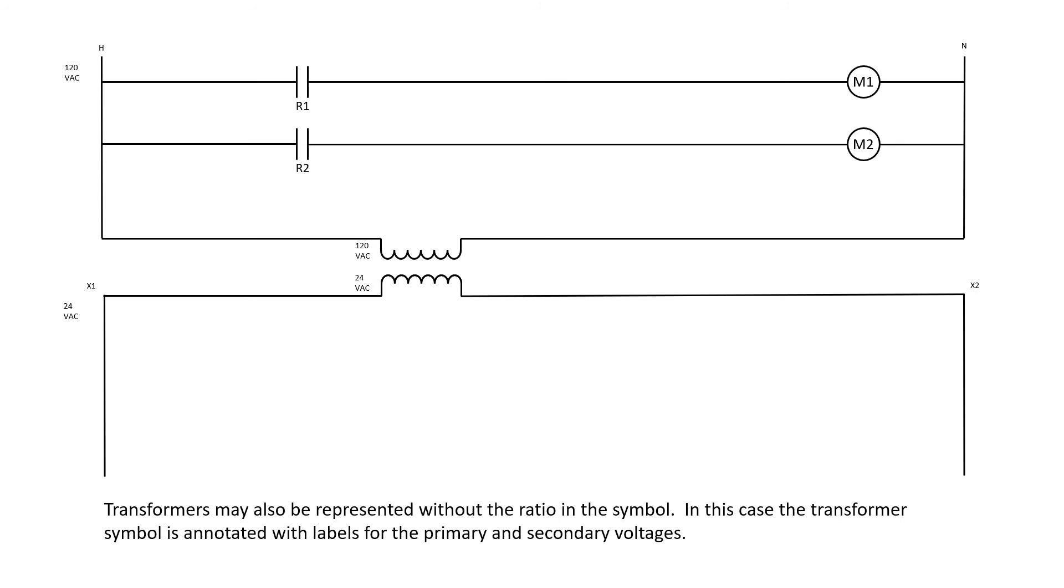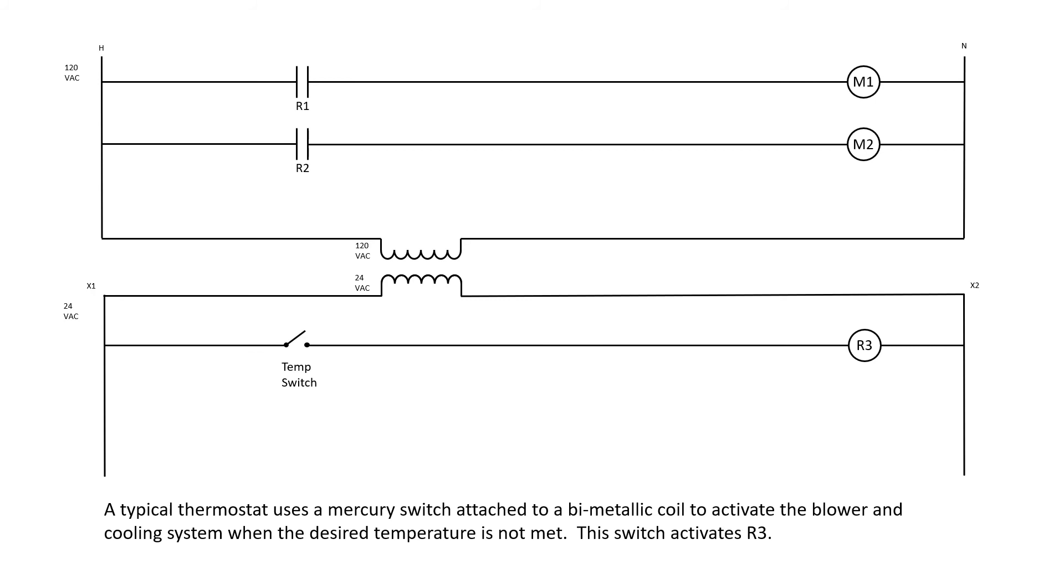Transformers may also be represented without the ratio in the symbol. In this case, the transformer symbol is annotated with labels for the primary and secondary voltages. A typical thermostat uses a mercury switch attached to a bimetallic coil to activate the blower and cooling system when the desired temperature is not met. This switch activates relay R3.